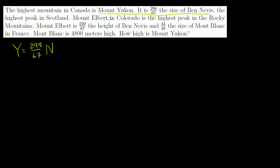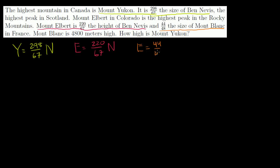Ben Nevis is the highest peak in Scotland. Mount Elbert in Colorado is the highest peak in the Rocky Mountains. Mount Elbert is 220 over 67 the height of Ben Nevis, so E is equal to 220 over 67 times Nevis. And it is also 44 over 48 the size of Mount Blanc, so Elbert is equal to 44 over 48 times B for Mount Blanc. They also tell us Mount Blanc is 4,800 meters high, so B is equal to 4,800.